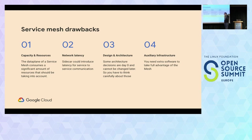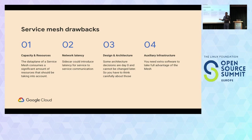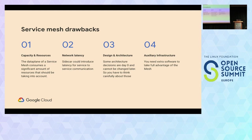Now, what are the four main challenges that service meshes still have today? One is capacity and resources — a service mesh runs proxies with your application containers, and those proxies consume CPU and memory. There is network latency — whenever there is a proxy, there is latency, no way around it. There are challenges with how you design and architect your service mesh to be scalable from day one. And then once deployed, a service mesh will give you a bunch of data and telemetry that requires deploying extra auxiliary infrastructure to collect, store, and visualize it.